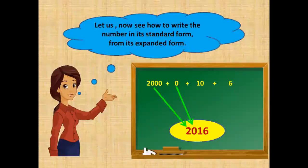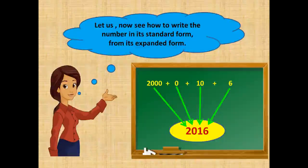0 in the hundreds place, 1 in the tens place and 6 in the units place. So we get the number 2,016.